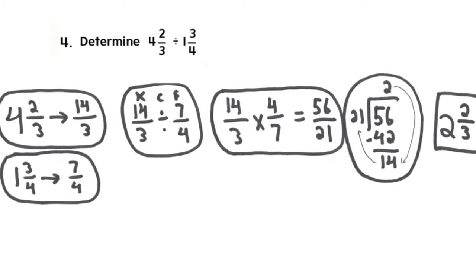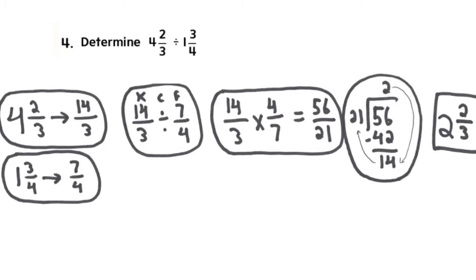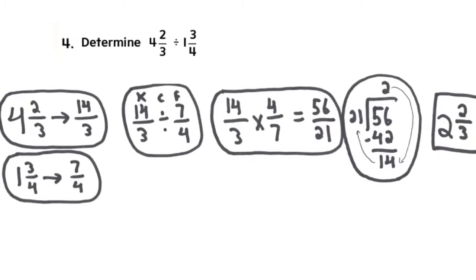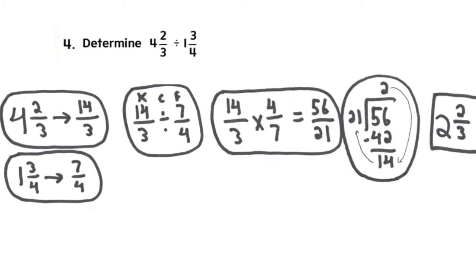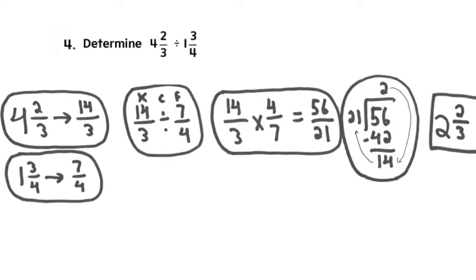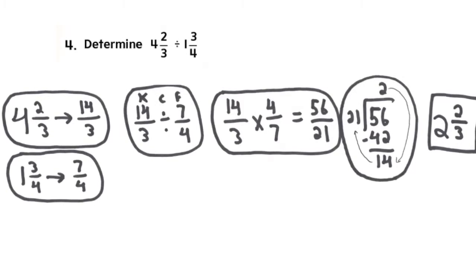In the final example, you'll notice that we have to turn both mixed numbers into improper fractions. Once you've done that and rewritten your problem, you still have to keep, change, flip. Then after doing that, you end up with 14 over 3 times 4 over 7.